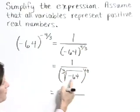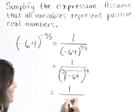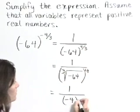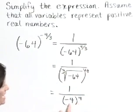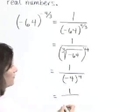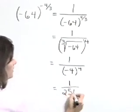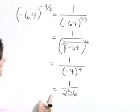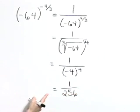Now the cubed root of negative 64 is negative 4, and negative 4 raised to the 4th power is a positive 256. So negative 64 raised to the negative 4 thirds power is equal to 1 over 256.